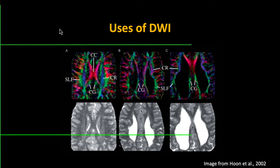Looking at some examples from the pathology literature — at the end of this workshop you'll be generating these so-called tensor fitted images. The color codings are standardized across all software packages. Red refers to left-right diffusion primarily. Blue — as seen in the corona radiata — refers to bottom-to-top diffusion. Green is posterior to anterior, like the superior longitudinal fasciculus. The intensity of that color refers to how strong that direction is.